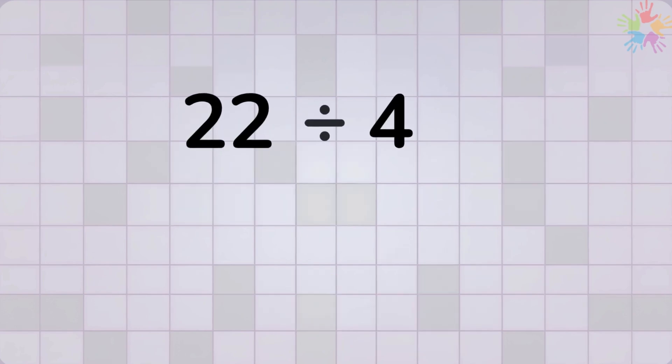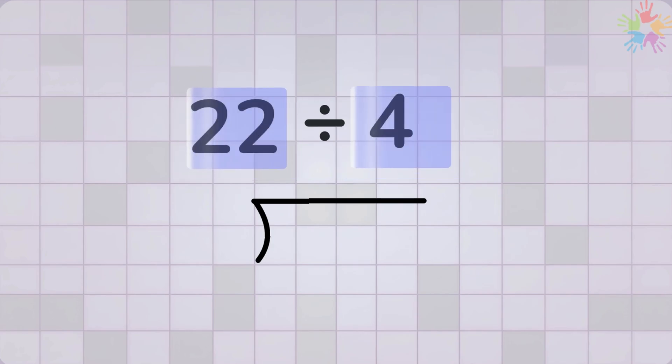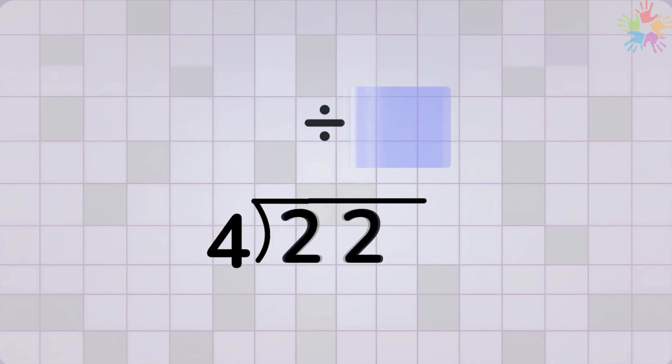Example 3. 22 divided by 4. This time, we will see a remainder. We want to divide 22 by 4. Place the number 4 outside and 22 inside.